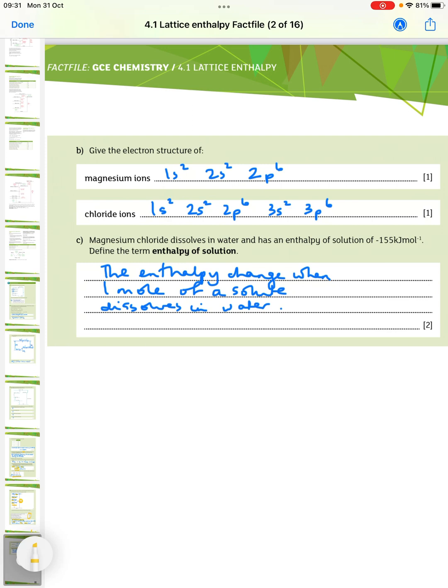Finally, give the electron structure of magnesium ions. So, magnesium atom would be 1S2, 2S2, 2P6, 3S2. So, magnesium ions are 1S2, 2S2, 2P6. And the chloride ions then have gained an electron, so 1S2, 2S2, 2P6, 3S2, 3P6.